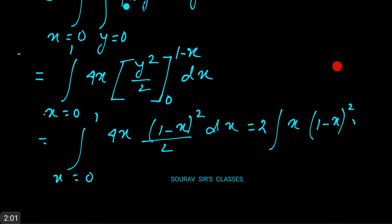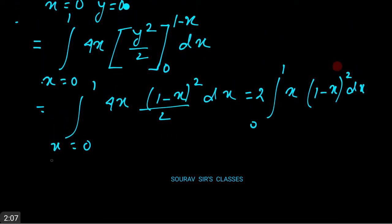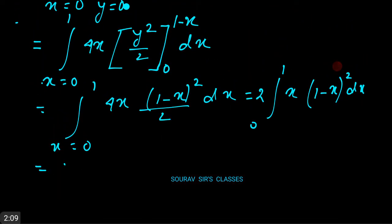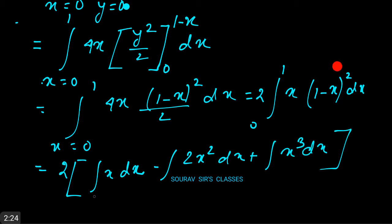Now in the next line we can write it as 2 times integration of (x - 2x² + x³) dx. We are just using the formula of integration: integration of x dx minus integration of 2x² dx plus integration of x³ dx, and the limits are x equal to 0 to 1.